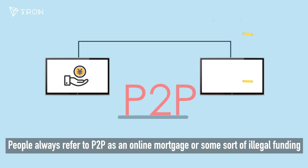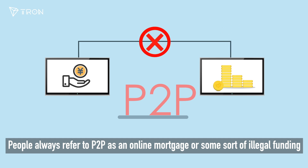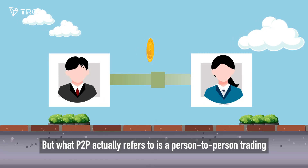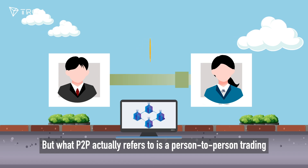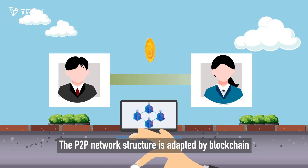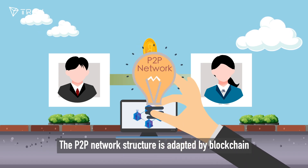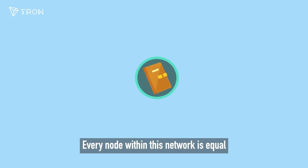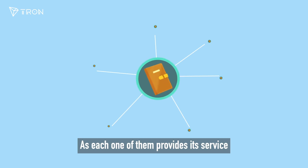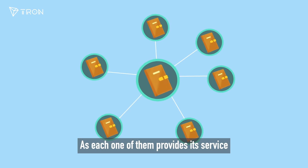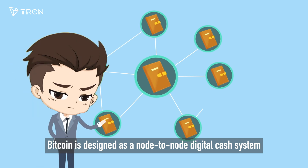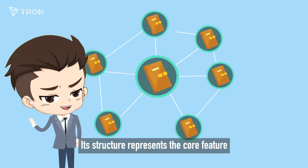People always referred to P2P as an online mortgage or some sort of illegal funding, but what P2P actually refers to is person-to-person trading. The P2P network structure is adapted by blockchain — every node within this network is equal, as each one of them provides its service. Bitcoin is designed as a node-to-node digital cash system, and its structure represents this core feature.